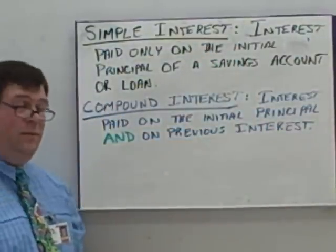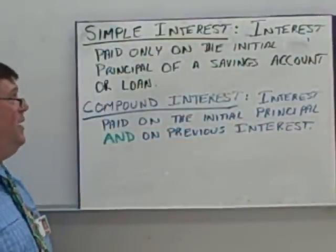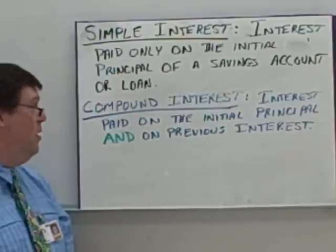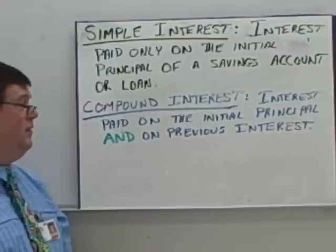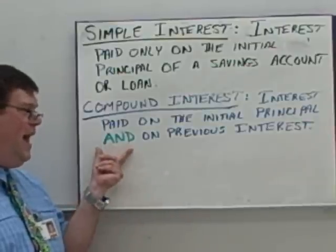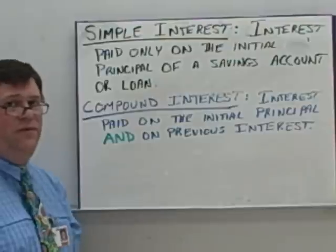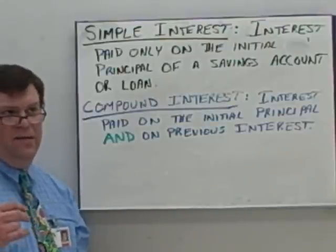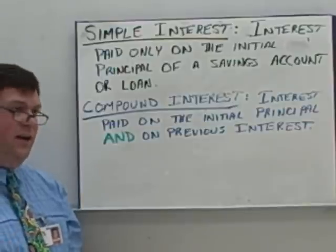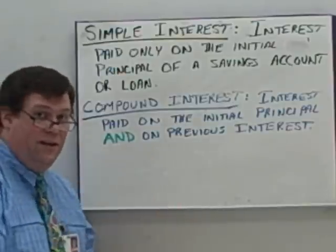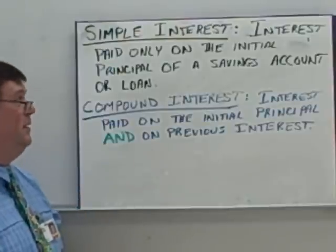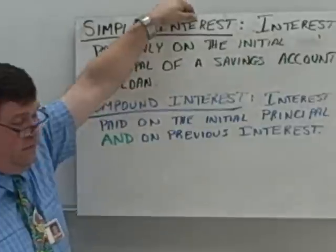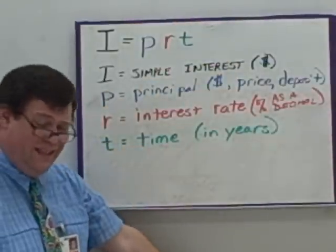Simple interest. Simple interest is interest that is paid only on the initial principal of the savings account or loan. Whereas compound interest is interest paid on the initial principal and on previous interest — where if you earn $10 this month, next month you're earning interest on the principal plus that $10. But we're going to focus in on simple interest.